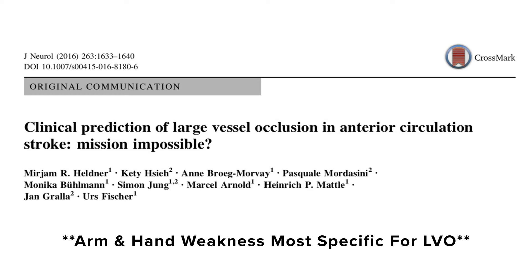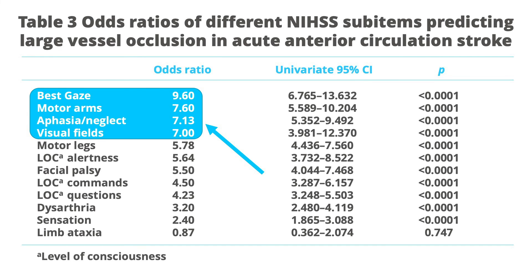A study out of Switzerland looked at the best predictors of large vessel occlusion using the NIH Stroke Scale in over 1,000 patients. Motor arm was better than face or leg with an odds ratio of 7.6. But the top four predictors overall were gaze, aphasia, neglect, and motor weakness — which is exactly the VAN exam.